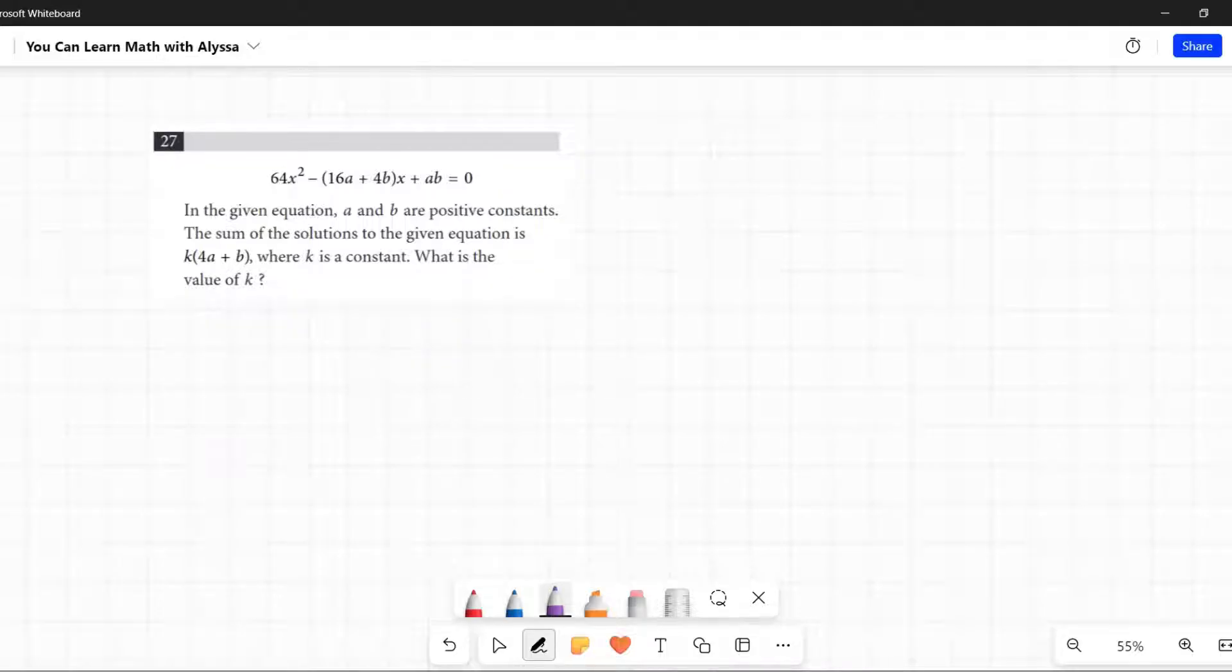Hopefully some of the earlier problems weren't too time consuming, so you're able to give some more time and thought to this one because I think it's going to need it. We start with 64x² - (16a + 4b)x + ab = 0. In the given equation, a and b are positive constants. The sum of solutions to the given equation is k times (4a + b), where k is a constant. What is the value of k?